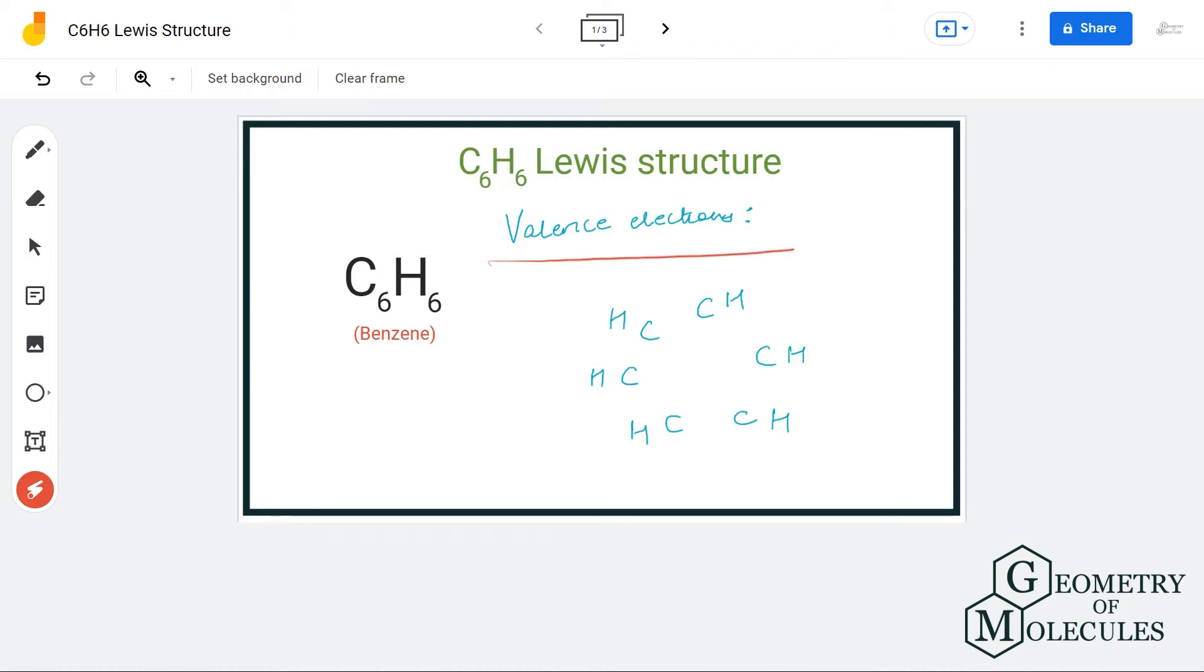Here we have six carbon atoms, and each carbon atom has four valence electrons. We have six hydrogen atoms, and each hydrogen atom has one valence electron. So in total we have 30 valence electrons for this molecule.